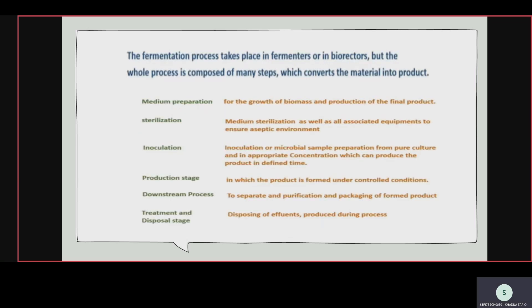The fermentation process in fermenters or bioreactors is composed of six steps. Number one is medium preparation — we first prepare the medium for the production of the desired product, for taking fermentation, for the growth of biomass, and for production of the final product.